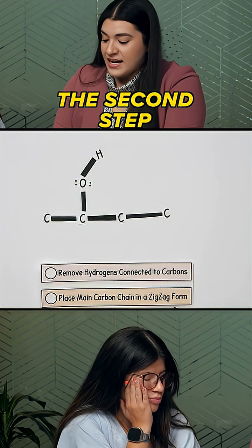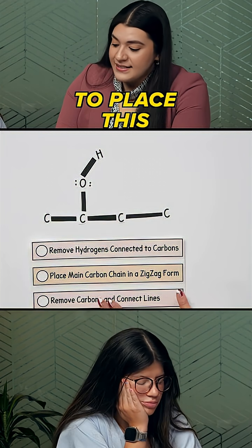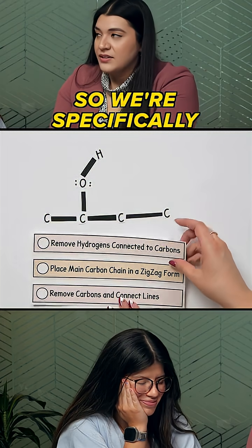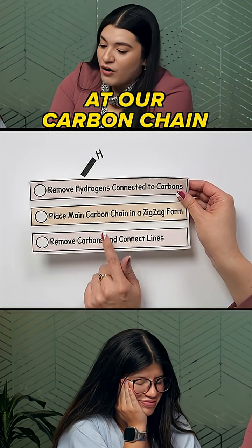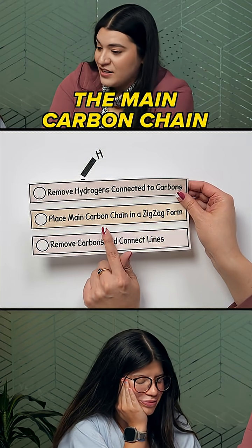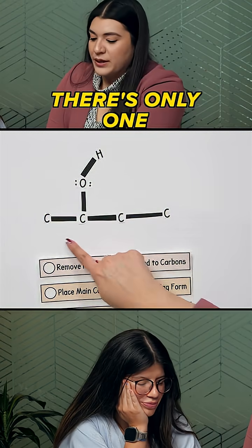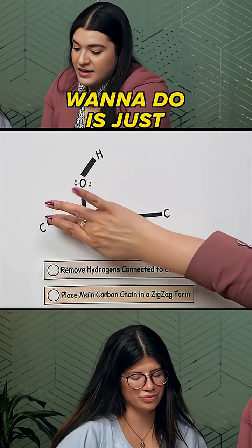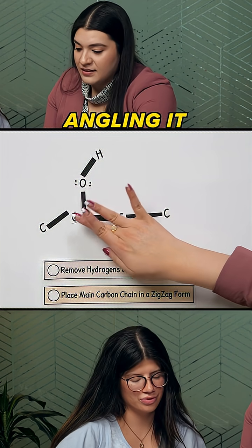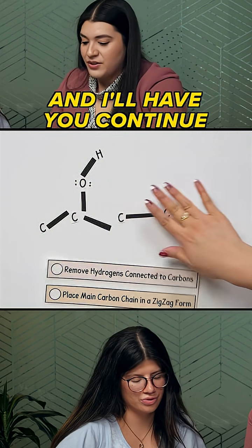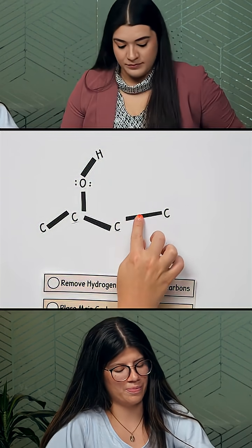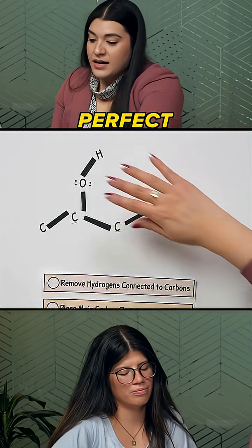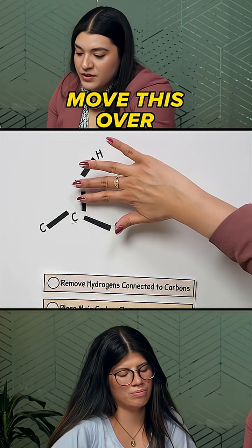The second step is then to place this in a zigzag form. We're specifically looking at our carbon chain — the main carbon chain, which in this case there's only one. So what we would want to do is just start angling it. I'll have you continue just with the carbons.